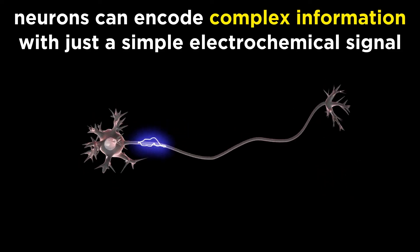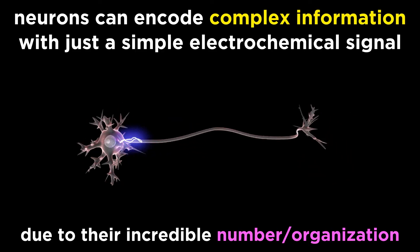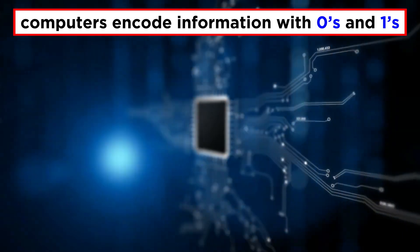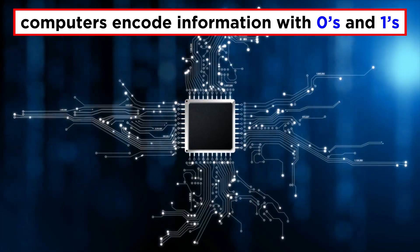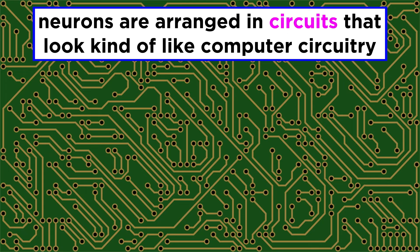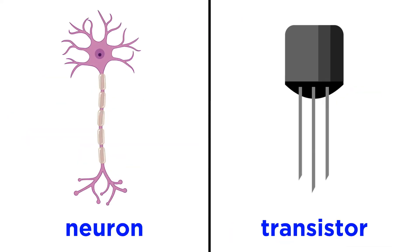While this is oversimplified, we may begin to see how something as simple as the transmission of an electrochemical signal can encode very complex information when we take into account the incredible number and organization of neurons — just the way that a bunch of zeros and ones being transmitted through the circuitry of your computer allows it to perform sophisticated tasks as well. In fact, neurons are indeed arranged in circuits that are loosely analogous to computer circuitry. Each neuron can both send and receive information, and chemical transmission across a synapse can yield either an excitatory or inhibitory response. Although it's not a perfect comparison, these similarities make a neuron not entirely unlike a transistor.